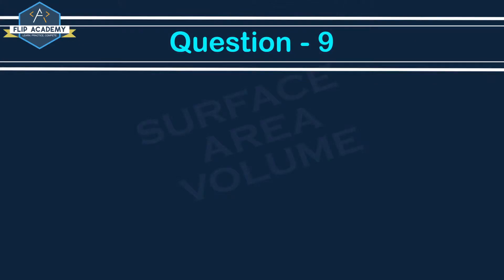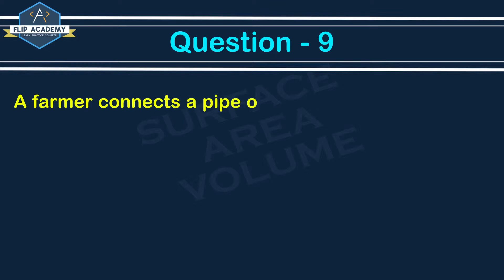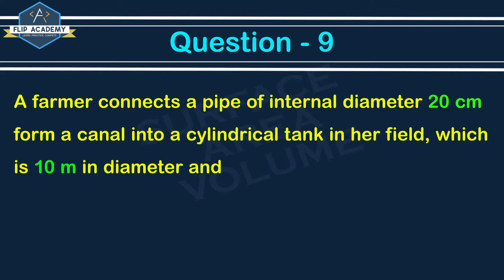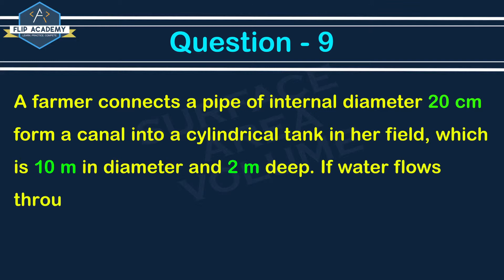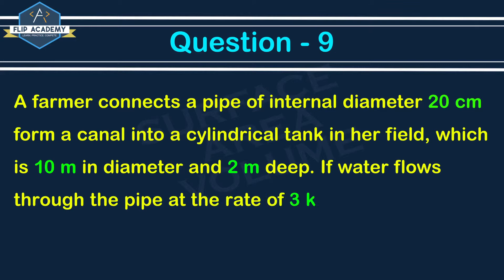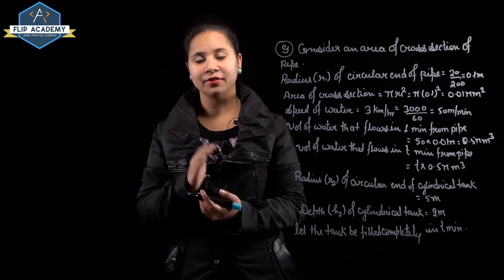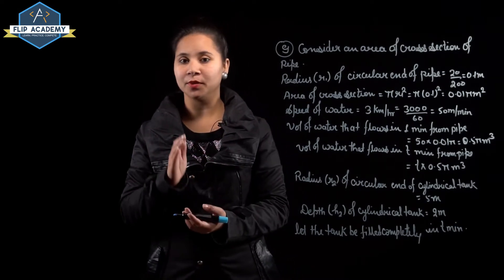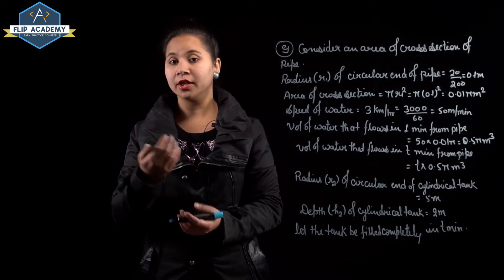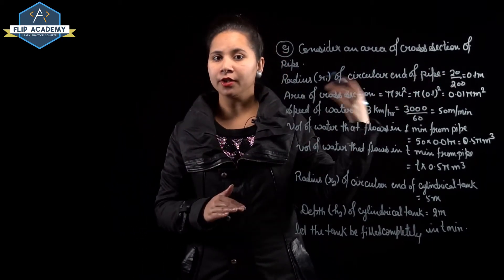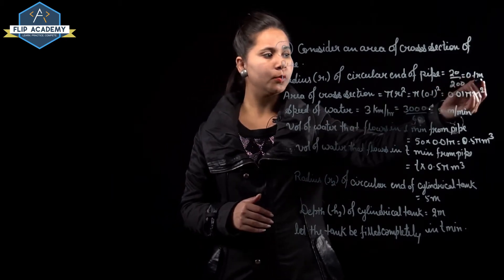Surface area and volume, exercise 13.3, question number 9: A farmer connects a pipe of internal diameter 20 cm from a canal into a cylindrical tank in her field, which is 10 m in diameter and 2 m deep. Water flows through the pipe at 3 km/hr. In how much time will the tank be filled? Given: diameter of pipe = 20 cm, so radius r1 = 10 cm = 0.1 m.